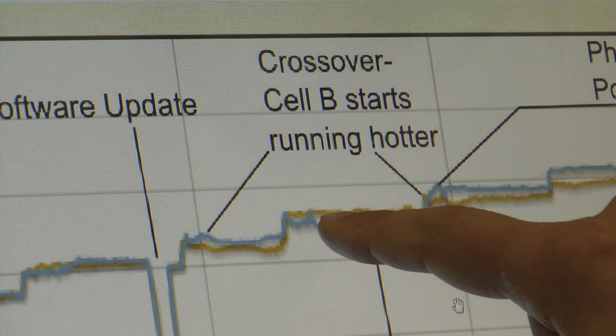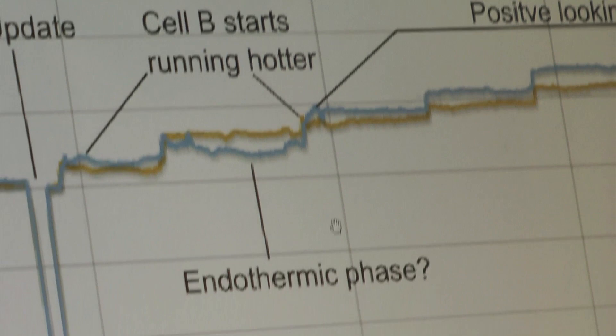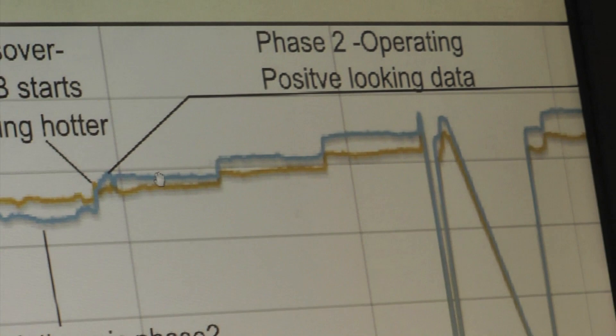Then, for the next several days, it ran consistently—the active cell was consistently hotter than the control cell. This is our positive-looking data in this section right here.